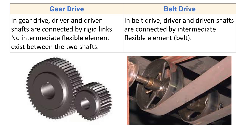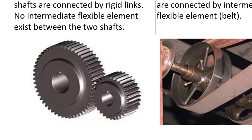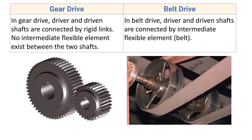In gear drive, driver and driven shafts are connected by rigid links — no intermediate flexible elements exist between the two shafts. The two elements are connected together by their teeth. Suppose this is a driver and this is a driven: they are connected together with no flexible element. So in gear drive, driver and driven shafts are connected by rigid links.